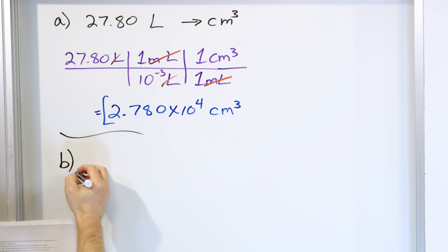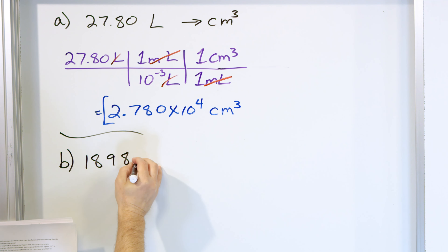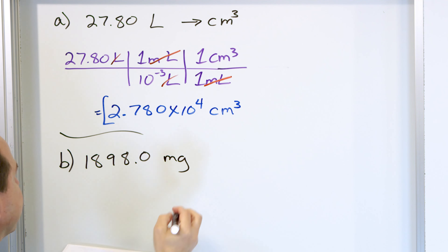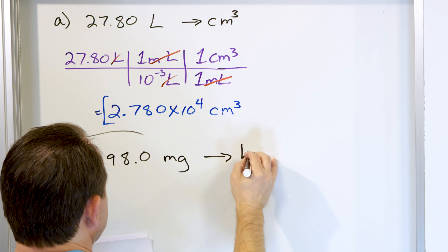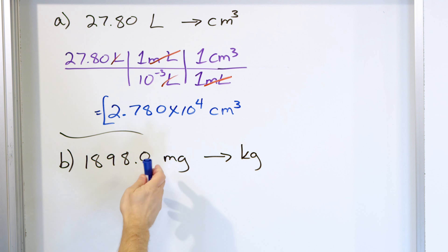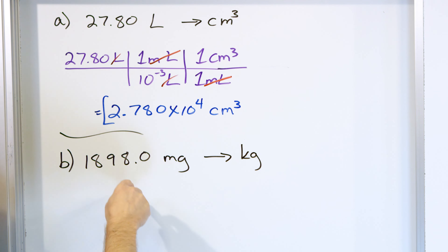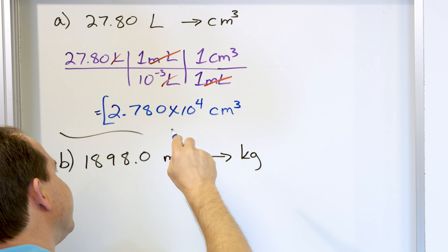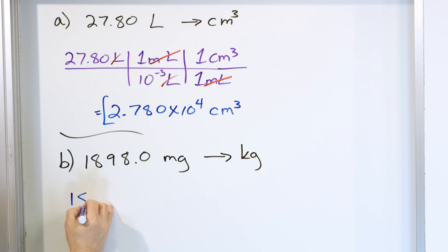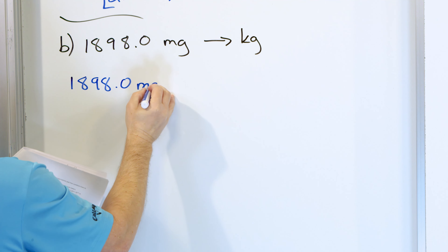Problem part B: 1,898.0 milligrams, and we're going to convert that to kilograms. So I don't have a conversion that goes directly from milligrams to kilograms, but I do know how to go from milligrams to grams, and then from grams to kilograms. So I'll write down what I know: 1,898.0, and that's milligrams.